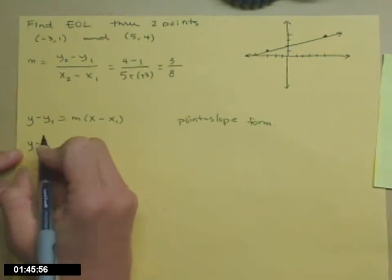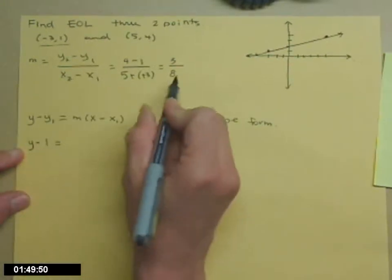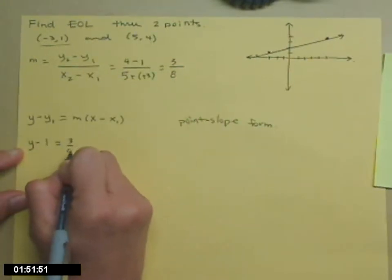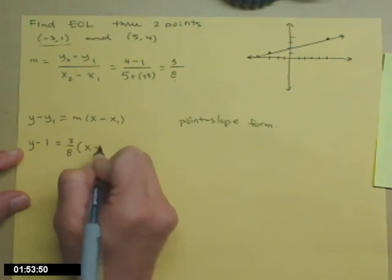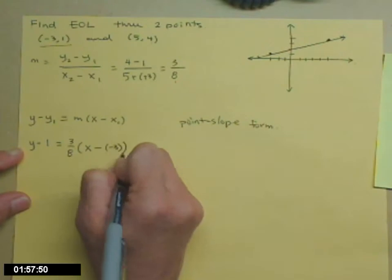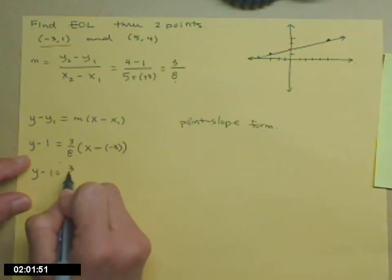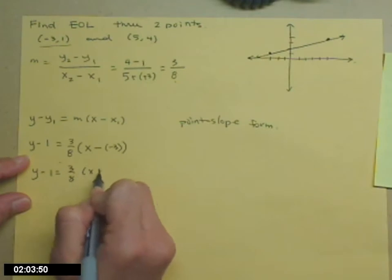y minus—pick one of the points. I'm going to choose that first one. So y - 1 = m. We know what m is now: 3/8 times x minus x₁. So that's going to be -3. Then we're going to tidy.